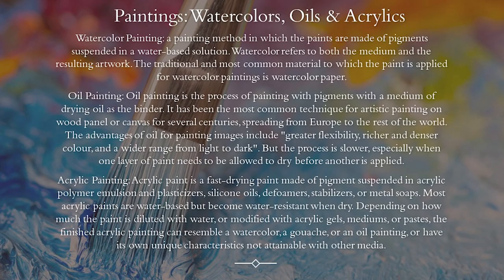Now we're going to talk about paintings: watercolor, oils, and acrylics. Watercolor painting is a painting method in which the paints are made of pigment suspended in a water-based solution. Watercolor refers to both the medium and the resulting artwork, and the most common material on which the paint is applied is watercolor paper. Oil painting is the process of painting with pigments with a medium of drying oil as the binder. It has been the most common technique for artistic painting on wood panel or canvas for several centuries, spreading from Europe to the rest of the world. The advantages of oil painting include greater flexibility, richer and denser color, and a wide range from light to dark, but the process is slower, especially when one layer of paint needs to dry before another is applied.